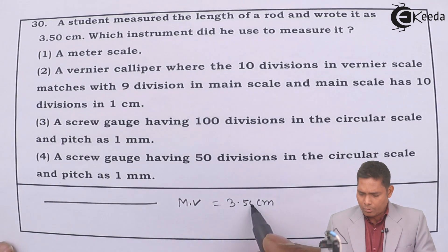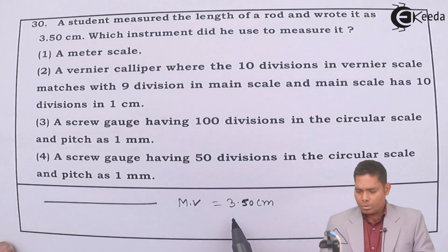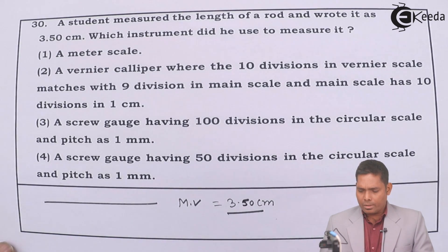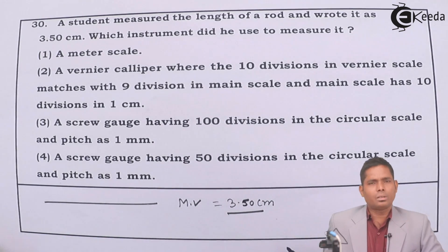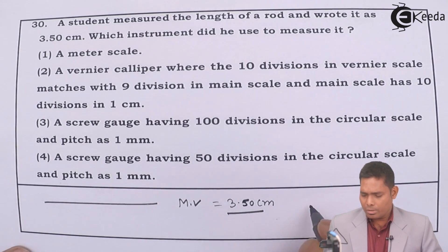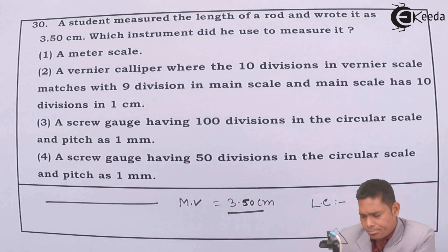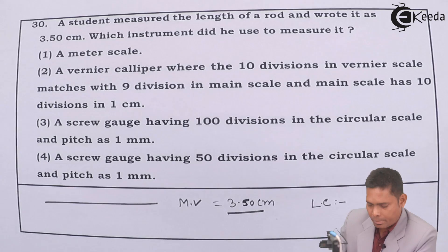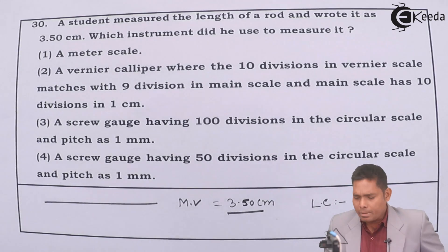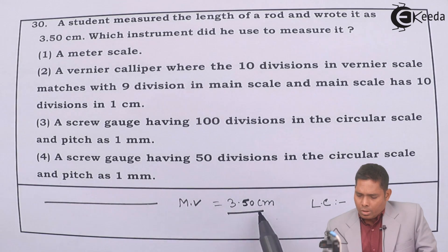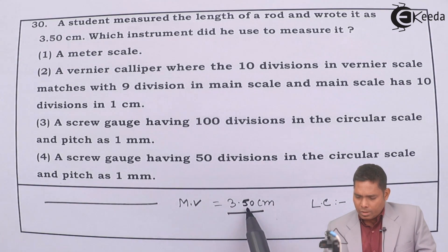From this measurement of 3.50 cm, which instrument was used? The thing is that you need to find the least count of the instrument. Least count means the least value the instrument can measure. For example, in the case of a meter scale, the least count is 1 mm, because a meter scale cannot measure less than 1 mm. So here, from the measurement, it has got three significant figures.